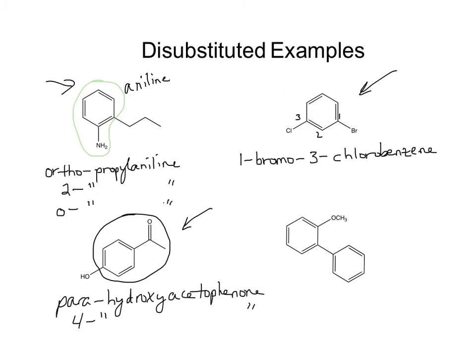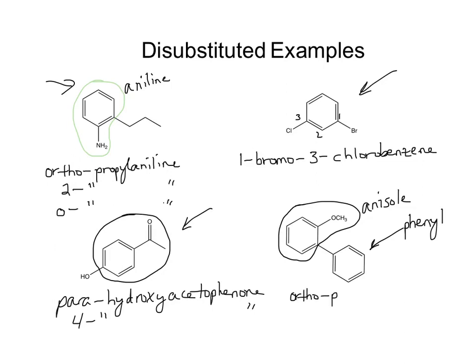Going to our last disubstituted example. The parent is anisole. On the list of common names you'll also see that a benzene ring as a substituent is called phenyl — P-H-E-N-Y-L — not phenol, which has an OH. The phenyl group is ortho to the parent group, so we call this ortho-phenylanisole, or equivalently 2-phenylanisole.